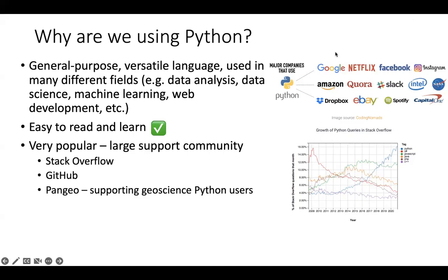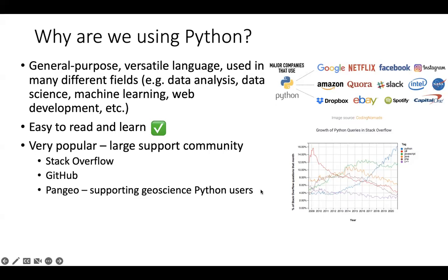Places to find help include Stack Overflow, which is great for coding questions, and GitHub, where you might find answers when Googling issues. I'll also give a shout-out to Pangeo — a community I'm very involved in — which supports anyone in the geosciences, including ocean and climate scientists, providing community support to help people learn and progress in their scientific computing journey.